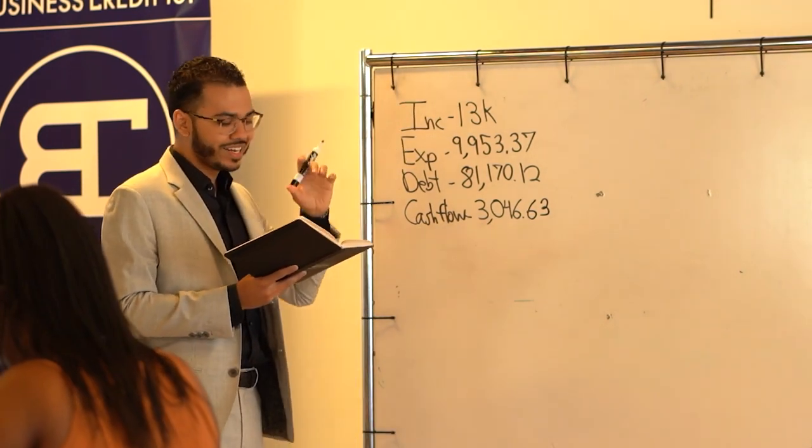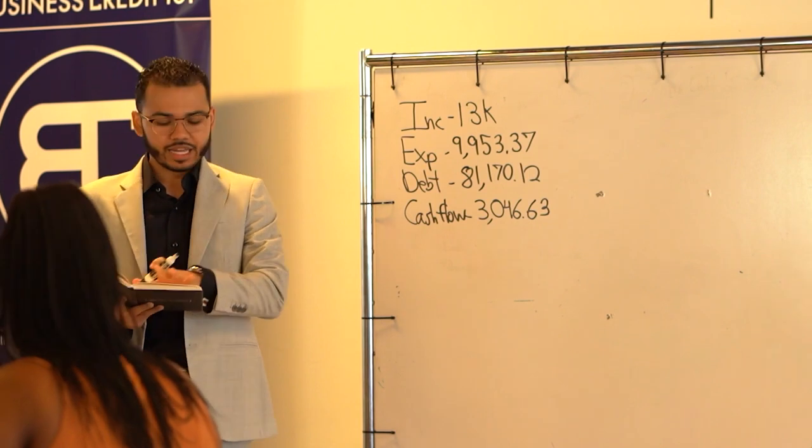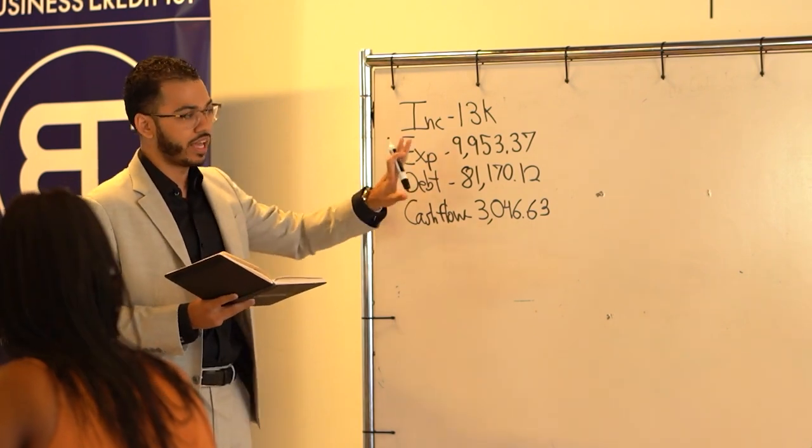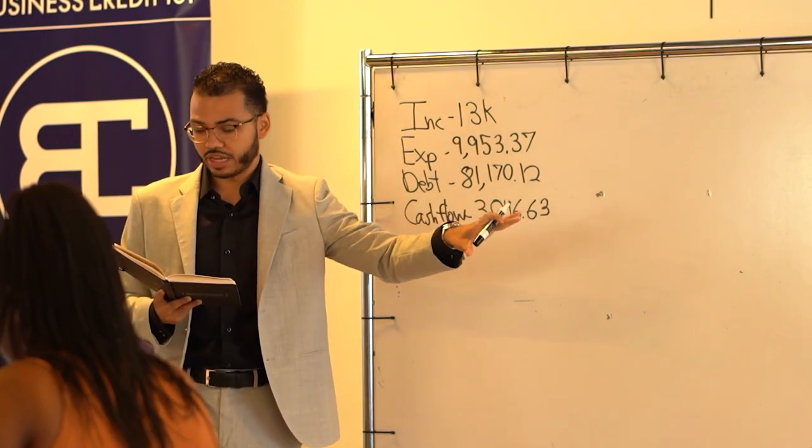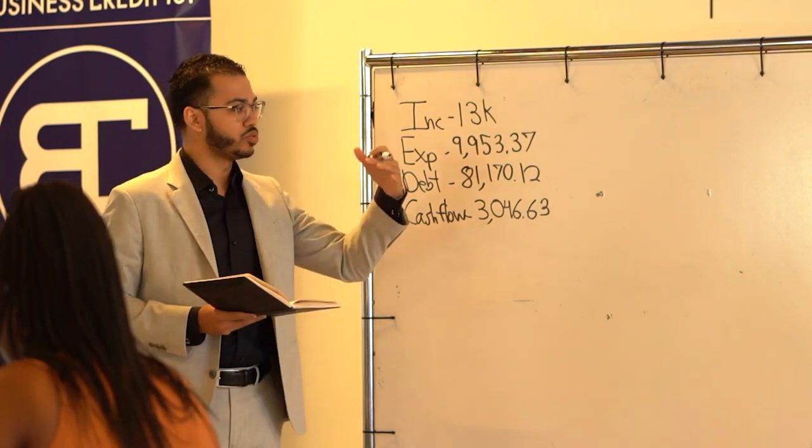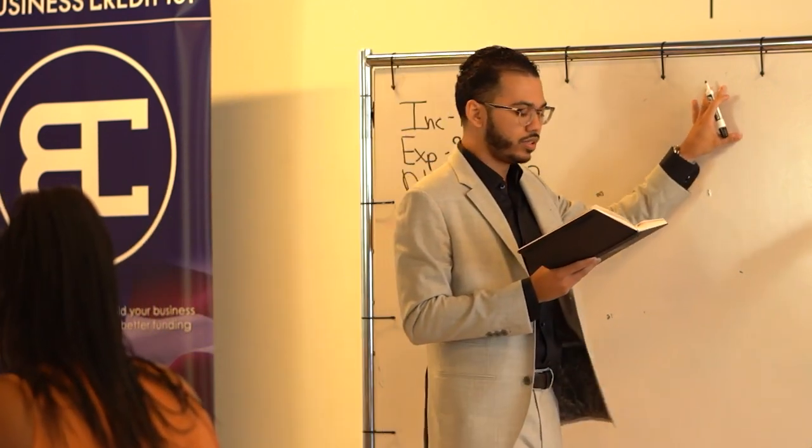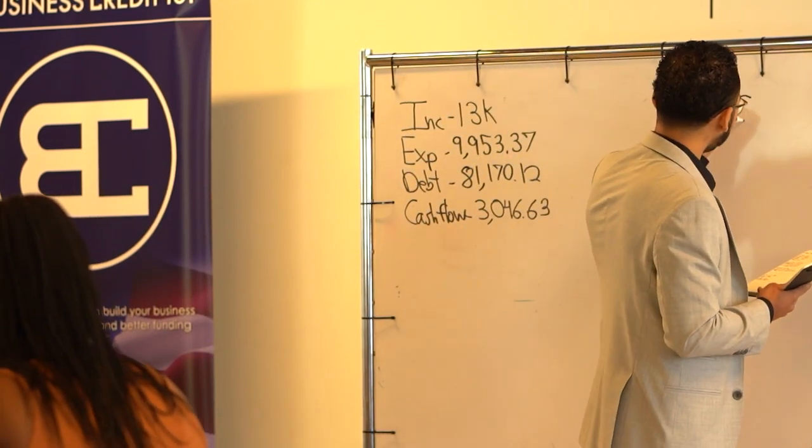Total debt is $81,170.12. Like, down to the T, right? Net cash flow, we're looking at somewhere around $3,046.63. When I was initially working with them, when they first became a client, they did not have a line of credit just yet.